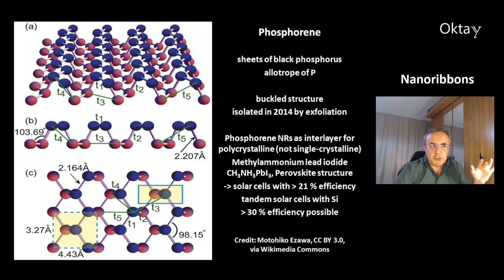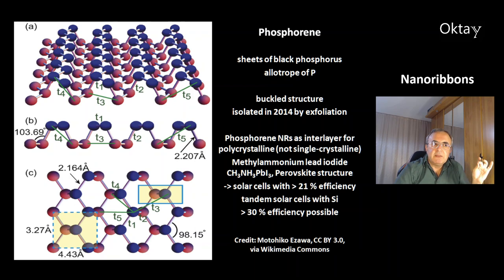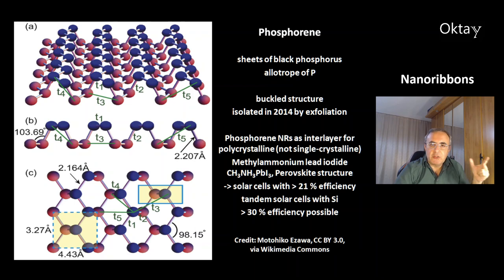Another compound is phosphorene, made from sheets of black phosphorus — one of the allotropes of elemental phosphorus. It also has a buckled structure and was isolated in 2014 by exfoliation. Phosphorene nanoribbons are very interesting as interlayers for polycrystalline — rather than single crystalline — methylammonium lead iodide (CH3NH3PbI3), which has a perovskite structure. Polycrystalline is cheaper, and with this compound you can make solar cells with efficiency above 21%, competing with silicon solar cells. Tandem solar cells with silicon could theoretically exceed 30% efficiency.